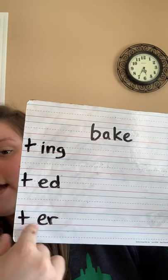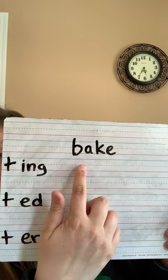We're going to add ing, we're going to add ed, or we're going to add er. So: bake has a magic E, I drop the magic E and add ing, it becomes baking. Bake has a magic E, I drop the E and add ed, it becomes baked. And bake has a magic E, I drop the magic E and add er, it becomes baker.